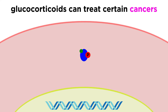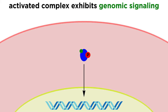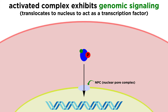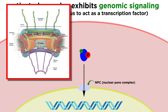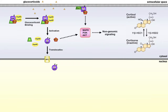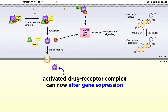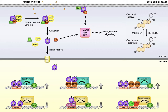Glucocorticoids are also used in the treatment of certain cancers, and this will be covered in more detail in later tutorials on anti-cancer chemotherapies. However, the predominant mechanism of action for glucocorticoids is through genomic signaling via the modulation of gene expression. The activated drug-receptor complex undergoes translocation into the nucleus via the nuclear pore complex, or NPC, which is a large pore protein that controls transit of many molecules into and out of the nucleus. Following passage into the nucleus, the drug-receptor complex alters gene expression via three mechanisms: direct, tethering, and composite.